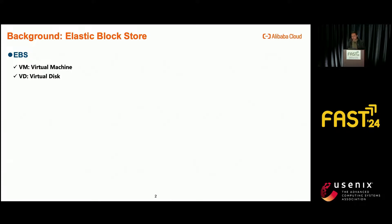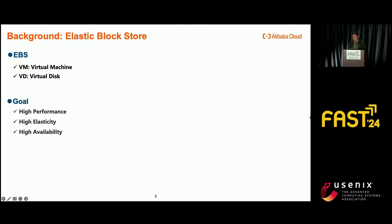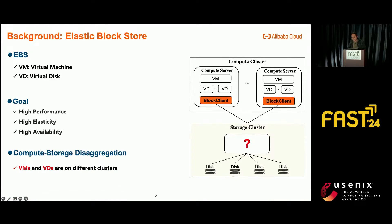We are no stranger to cloud computing these days. Users can subscribe computing resources in the form of virtual machines, and for storage, we can virtualize disks as block devices — this is what we call Elastic Block Store. For high availability and elasticity, simply co-locating the disks with virtual machines may not be a good choice, as a node can only host a certain number of disks, limiting scalability, and these disks can crash and lose data. Therefore, for modern cloud block store, we usually adopt compute-storage disaggregation, where compute nodes and storage nodes are placed on different clusters and interconnected via the data center network. In this talk, we focus on the design of such a block store and introduce lessons along this evolution.